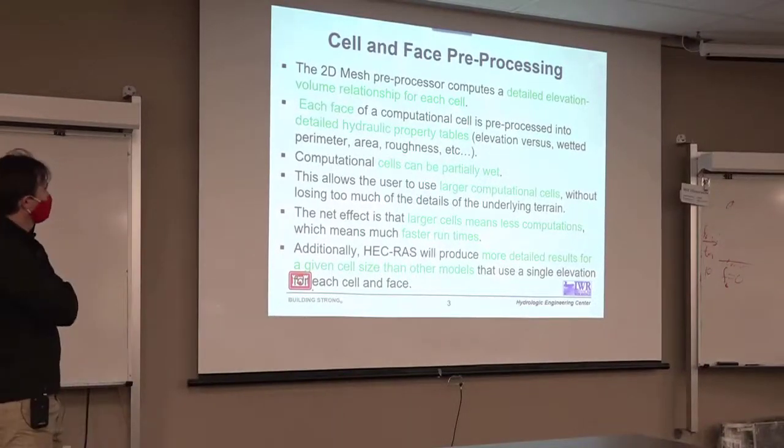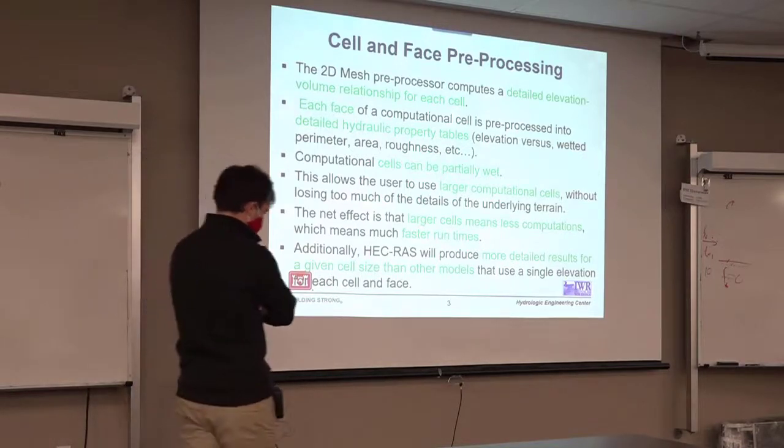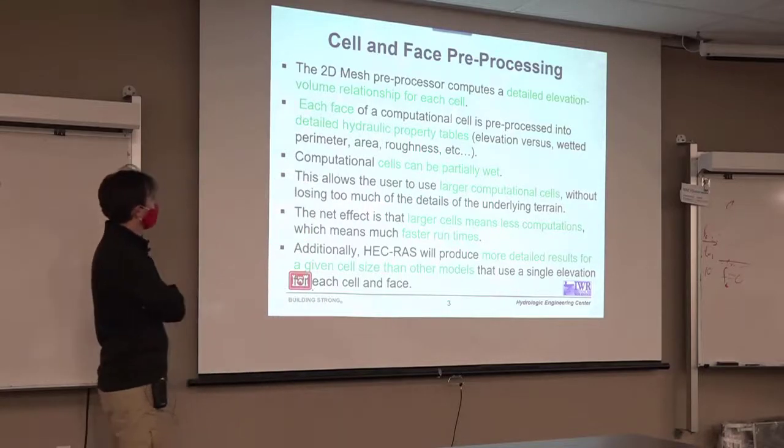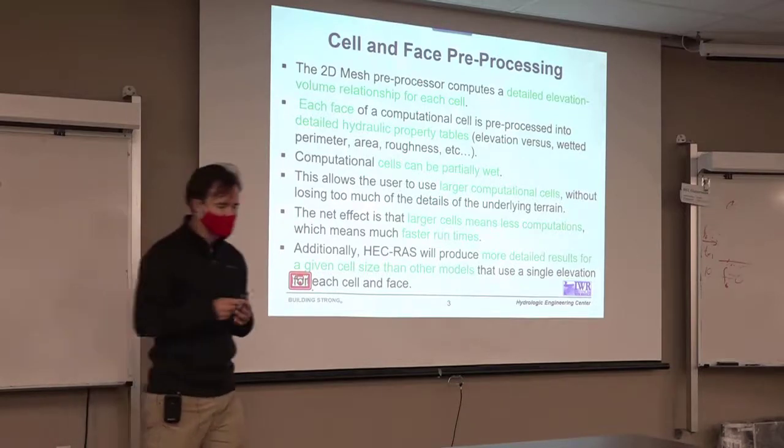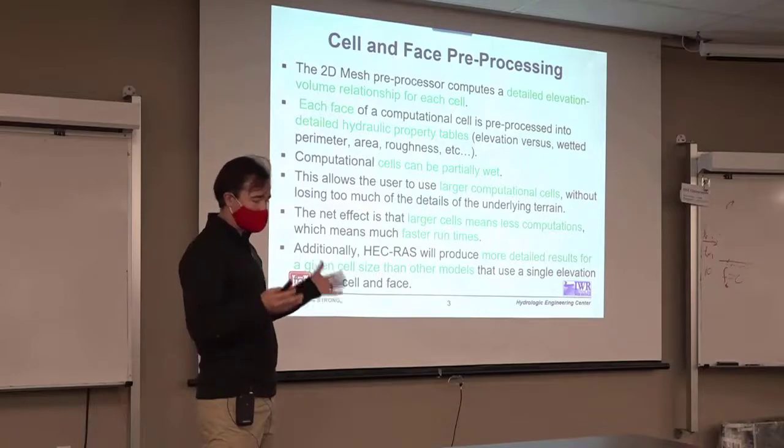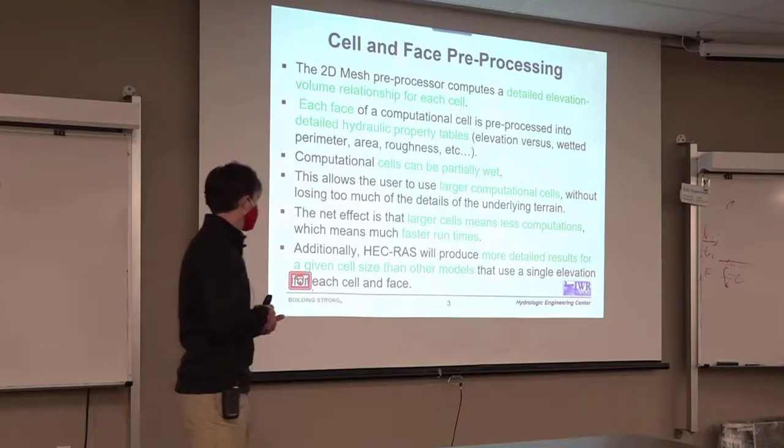If you're familiar with how the hydraulics are done, every cell is preprocessed, and hydraulic property tables are computed at the cells and the faces based on the detailed terrain underneath. Each cell can be partially wet and dry, and it allows for larger cells. Larger cells means bigger time steps, less cells, and that makes the model a lot faster.